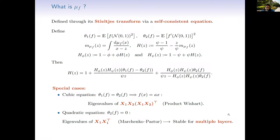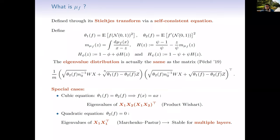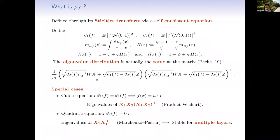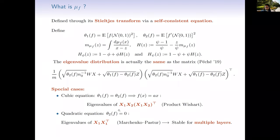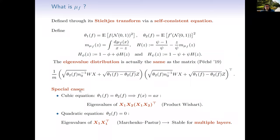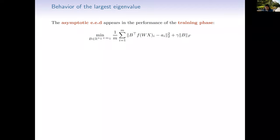The Fan-Wong paper states exactly what happens for multiple layers for any activation function. The asymptotic eigenvalue distribution of this random neural network model is an interpolation between the product Marchenko-Pastur and the full iid Marchenko-Pastur — these are the two extremal cases. If θ₁ = θ₂ you get one extreme; if θ₂ = 0 you get the other. Any other function gives an interpolation between the two.